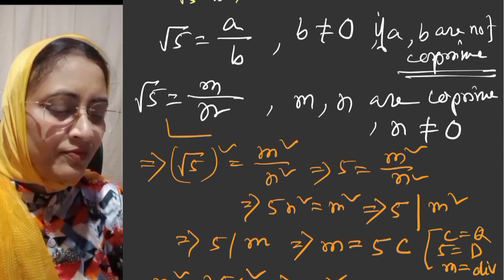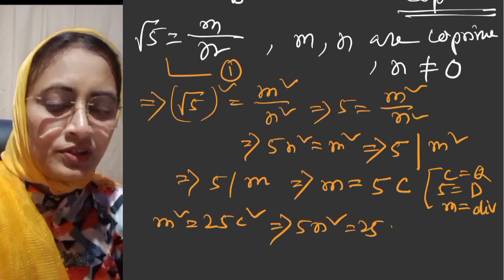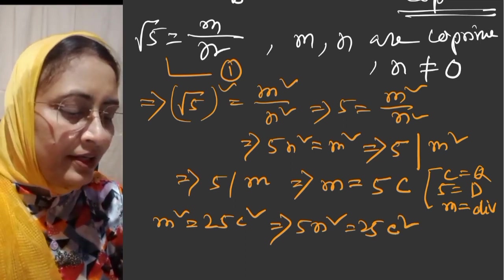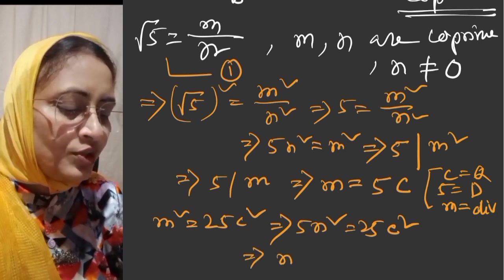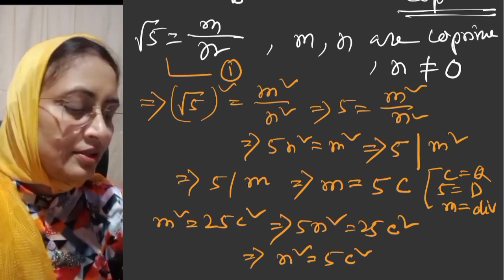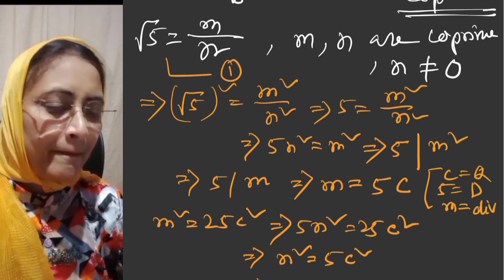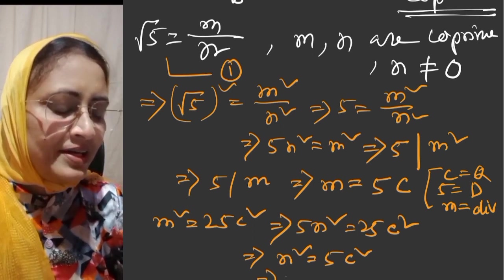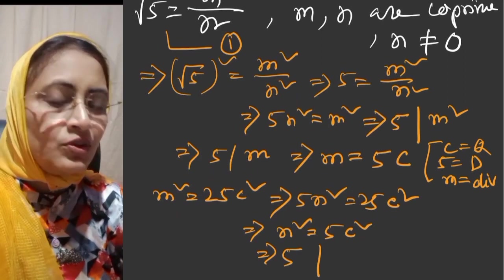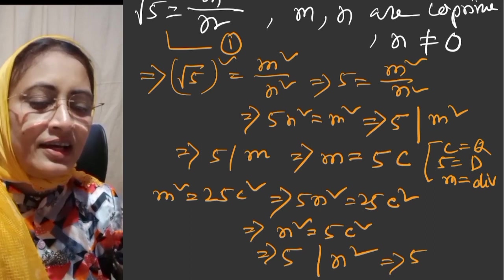From equations 1 and 2, 5n square is equal to 25c square. This implies n square is equal to 5c square. Therefore, 5 divides n square, which implies 5 divides n.